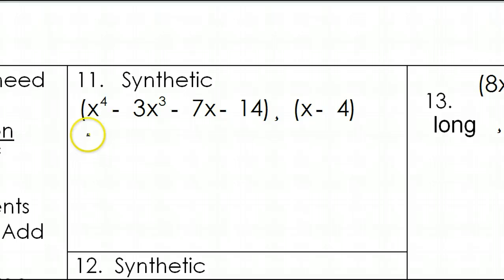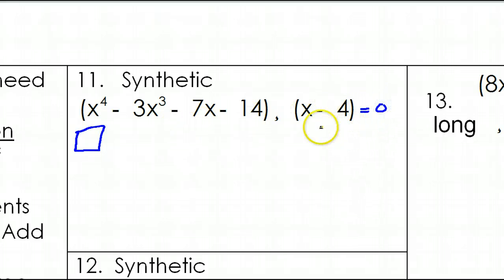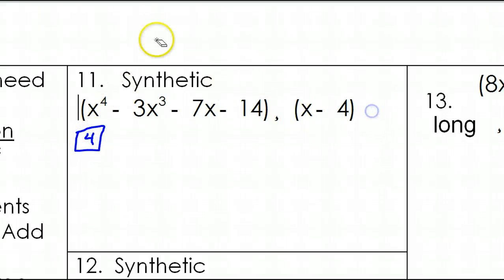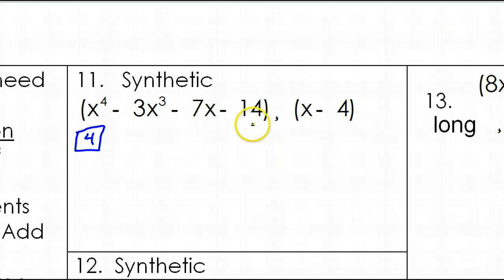Synthetic division worked like this. You start off with a box. We have x minus 4 — imagine setting this equal to 0 and solving. You would get 4 for the answer, so that's what you put in the box. Then you take your coefficients. Make sure that there are no missing terms. Do you see any missing terms?